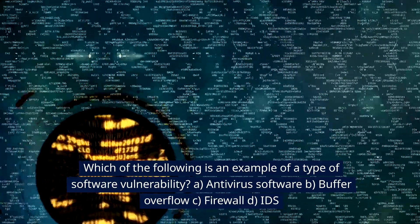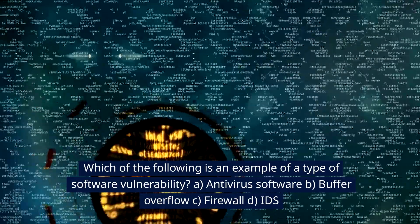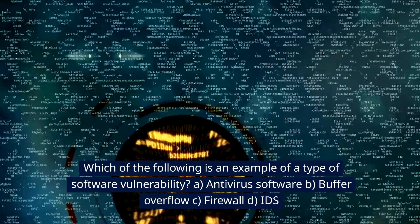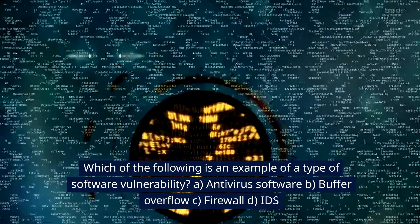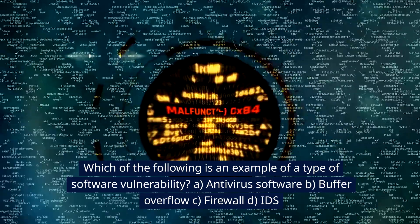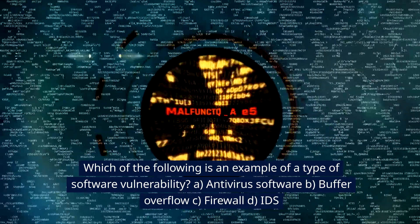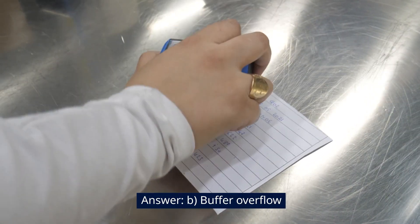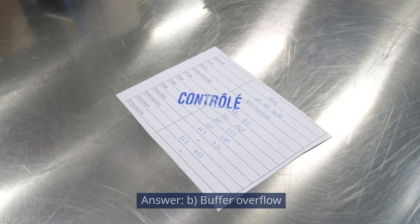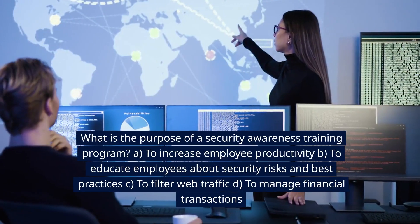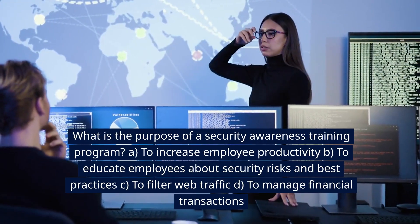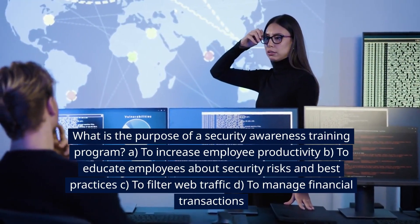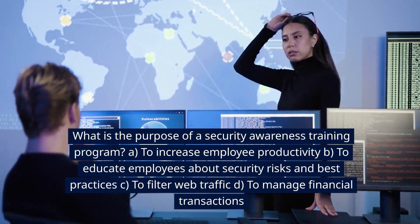Which of the following is an example of a type of software vulnerability? A. Antivirus software. B. Buffer overflow. C. Firewall. D. IDS. Answer: B. Buffer overflow.